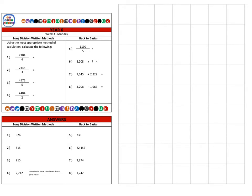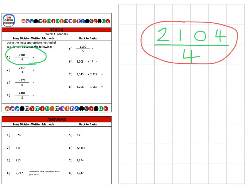On to the first question, which is 2104 divided by 4. Now the first thing we need to identify is that the division question has been written as a fraction, which is something you need to be aware of. In fact, you need to be aware of it in year five as well.